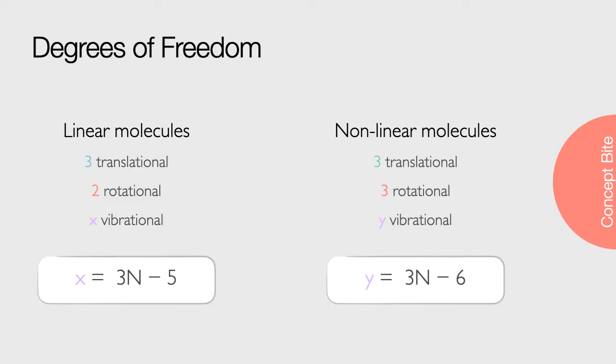So, just as a reminder, the total number of degrees of freedom in a molecule is 3N, where N is the number of atoms in that molecule. Each molecule has 3 translational degrees of freedom, and if it is linear, there will also be 2 rotational and 3N-5 vibrational degrees of freedom. If the molecule is non-linear, there will be 3 rotational and 3N-6 vibrational degrees of freedom.